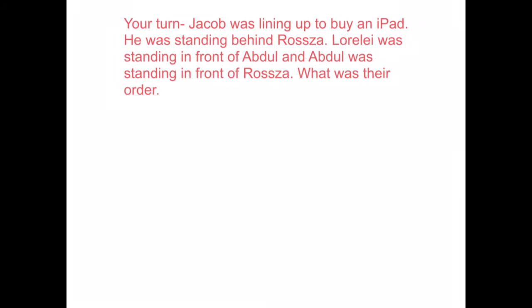Here's our last question, and for this one I'm going to get you to try to solve it. Once we finish reading it, I'm going to get you to pause it and try to solve it. Your turn. Jacob was lining up to buy an iPad. He was standing behind Rosa. Lorelai was standing in front of Abdul, and Abdul was standing in front of Rosa. What was their order? Remember, it seems quite confusing at first, but write down what you know, have a look and see if you can figure out who's standing in front of who, write it down, and try to write the order. I'll read it one more time: Jacob was lining up to buy an iPad. He was standing behind Rosa. Lorelai was standing in front of Abdul, and Abdul was standing in front of Rosa. What was their order? Have a go — pause it now and see if you can come up with it, then press play and we'll go back through it.